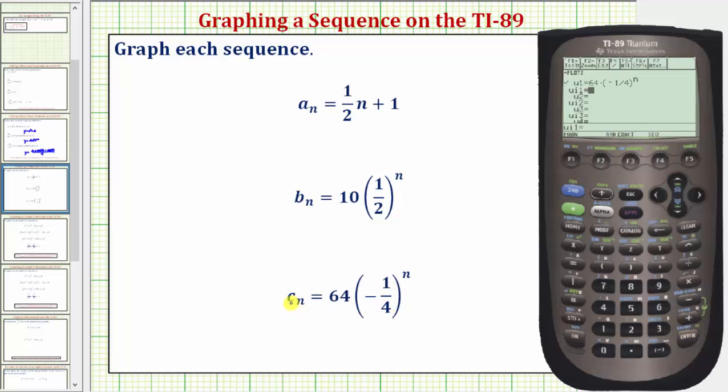Notice here the terms are going to alternate sign. So we will have to adjust the window to get a nice view of this graph. Notice when n is one, c sub one is equal to 64, times negative one fourth to the first, which would be negative sixteen. So let's go to the window by pressing diamond F2.